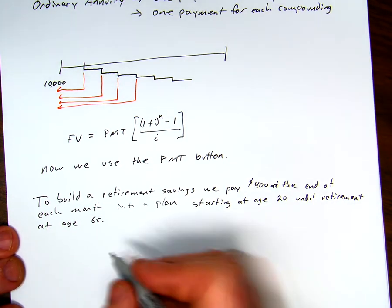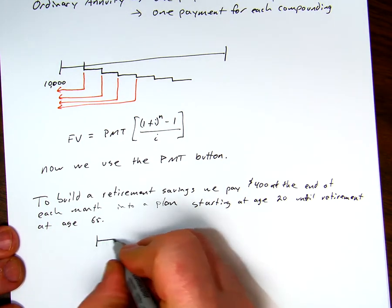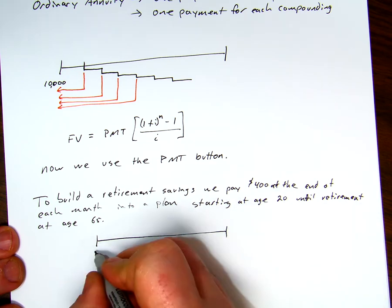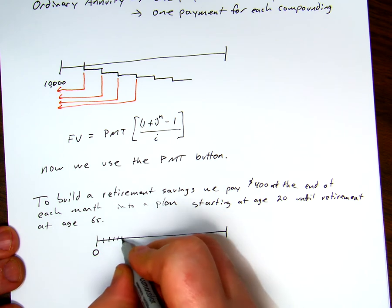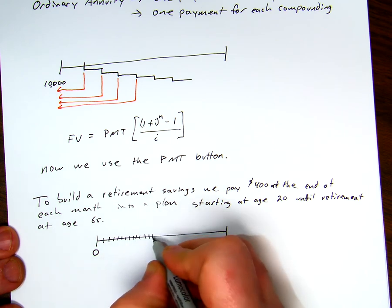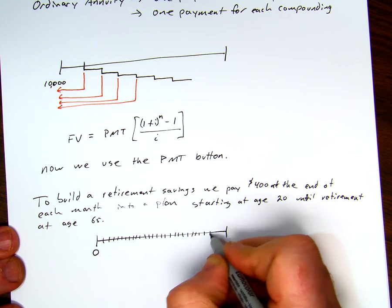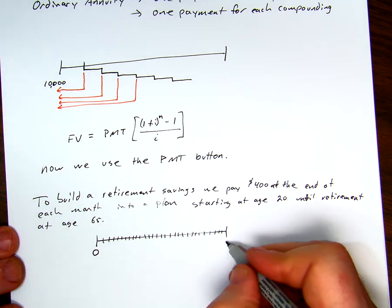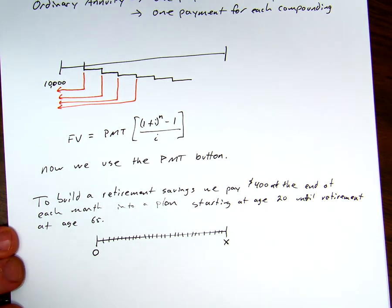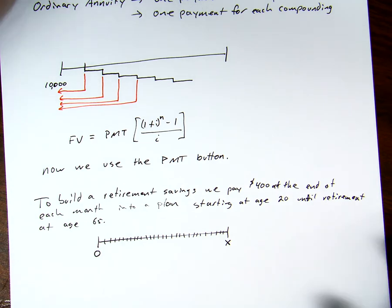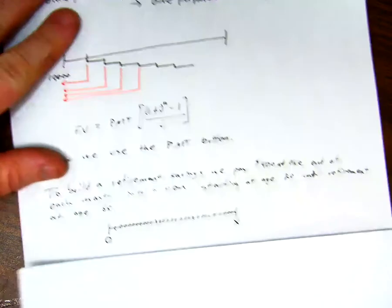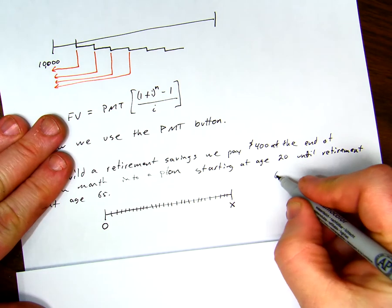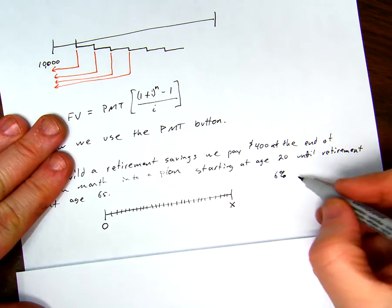We're going to do this every month until retirement at age 65. That's a lot of payments. Looking at our timeline, we're going to start with nothing — no present value — and make payments every month over and over until we retire. We also need an interest rate: we're going to make 6% compounded monthly.